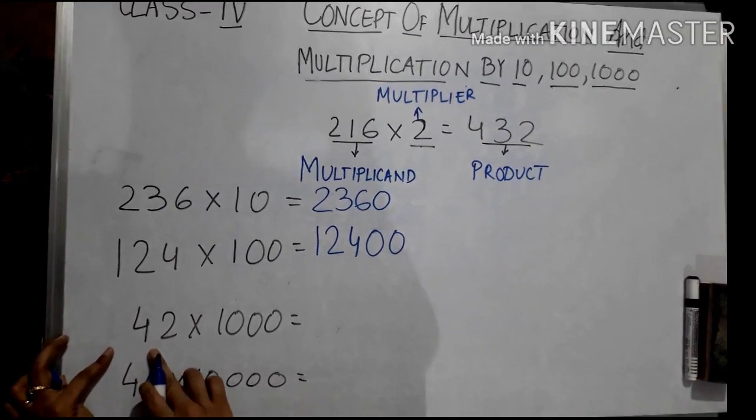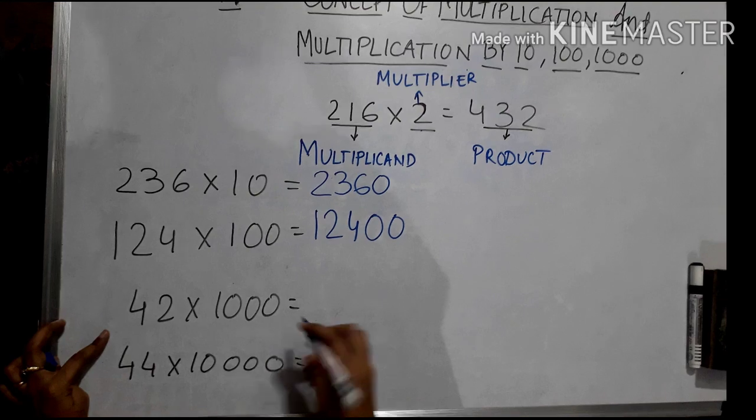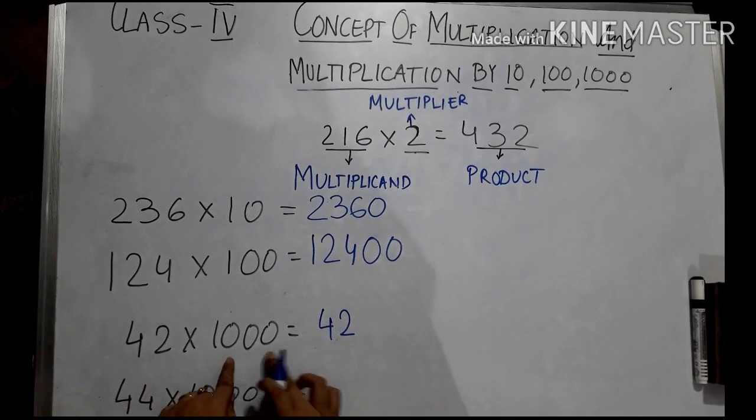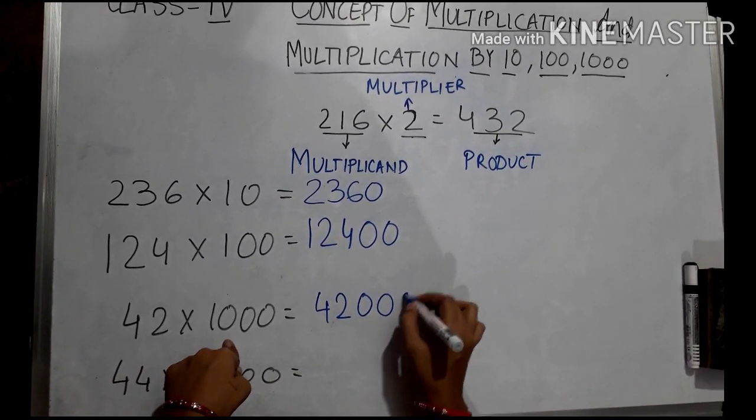Now the third example is 42 is multiplied with thousand. I will simply put 42 and the number of zeros in my product side.